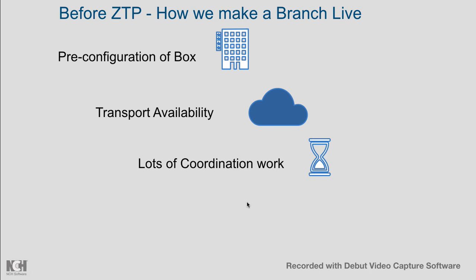The box is unpacked, pre-configured, repacked, and shipped to the branch location. At the branch, someone must unbox it, rack and stack it, and do all the cabling work. A lot of coordination is required among all the players involved. Most critically, you need a skilled engineer at the branch location to understand what configuration or troubleshooting is required when the boxes arrive.